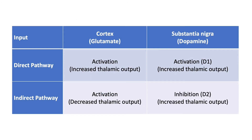To put it all together, there is input to the striatum from two different locations: the cortex, which uses glutamate, and the substantia nigra, which uses dopamine. Cortical activation of the direct pathway leads to increased thalamic output. Cortical activation of the indirect pathway leads to decreased thalamic output. Substantia nigra activation via D1 receptors of the direct pathway leads to increased thalamic output. Substantia nigra inhibition via D2 receptors of the indirect pathway leads to increased thalamic output. It is the combination of these pathways that allows for precise control of motor movement.